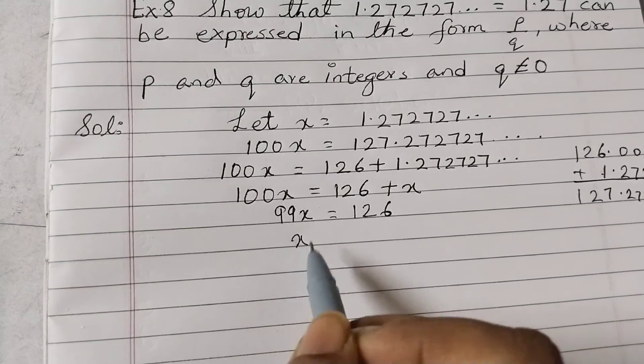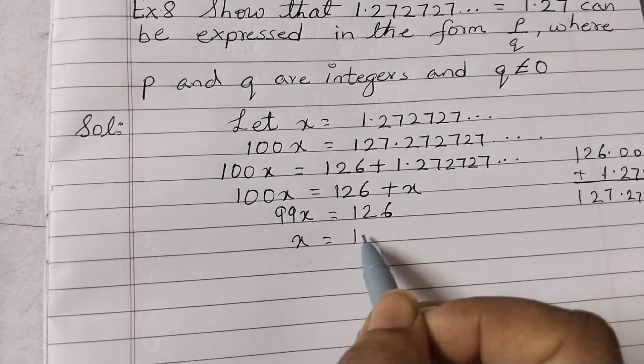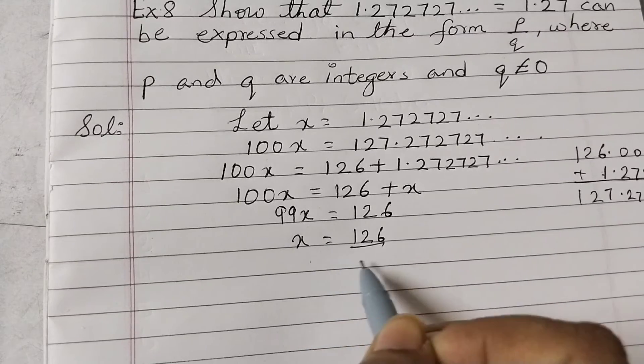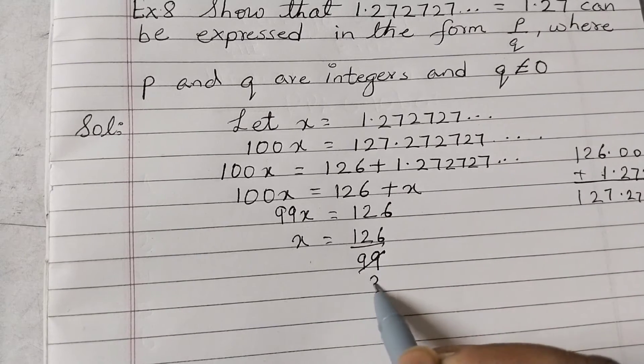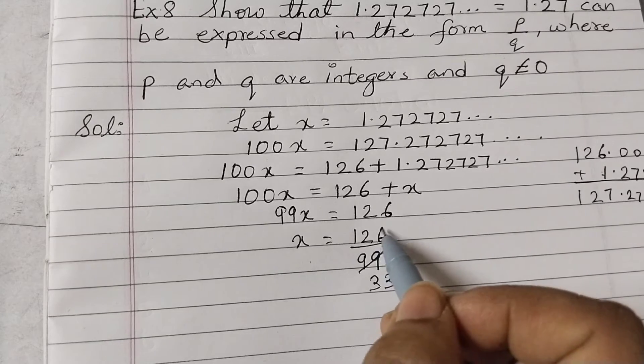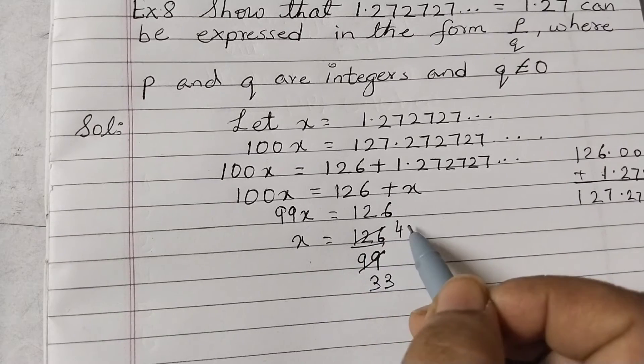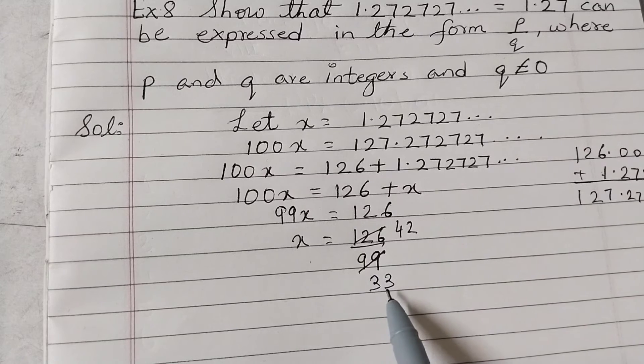Divide both sides by 99, so that would be 126 over 99. Now both these numbers are divisible by 3. So 3 times 42 is 126, 3 times 33 is 99. This gives us 42 over 33.